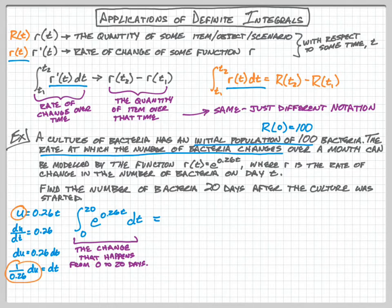We do some manipulation and we get dt = (1/0.26)du. So now this u can go into this function and we're left with (1/0.26) times the integral from 0 to 20 of e^u du. Easy enough, we can integrate that, which is e^u multiplied by our constant 1/0.26.